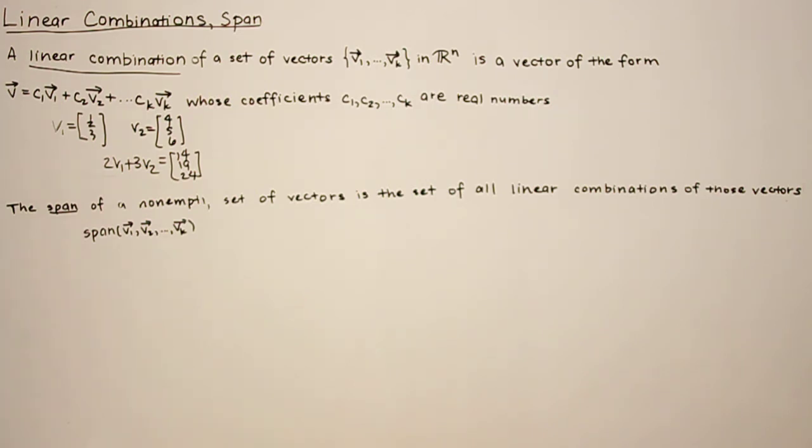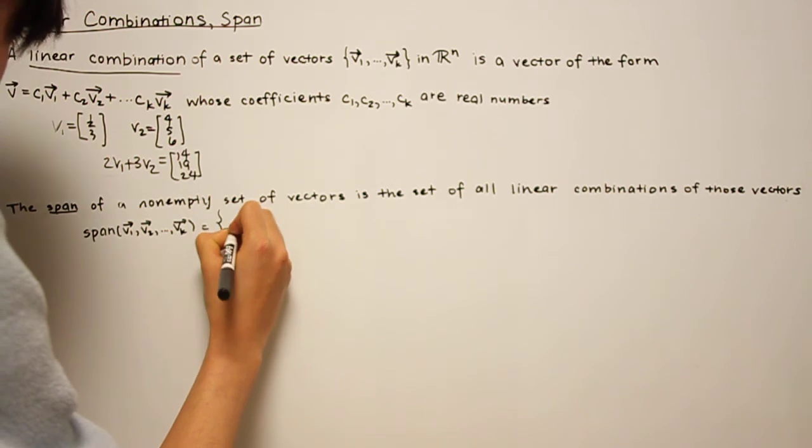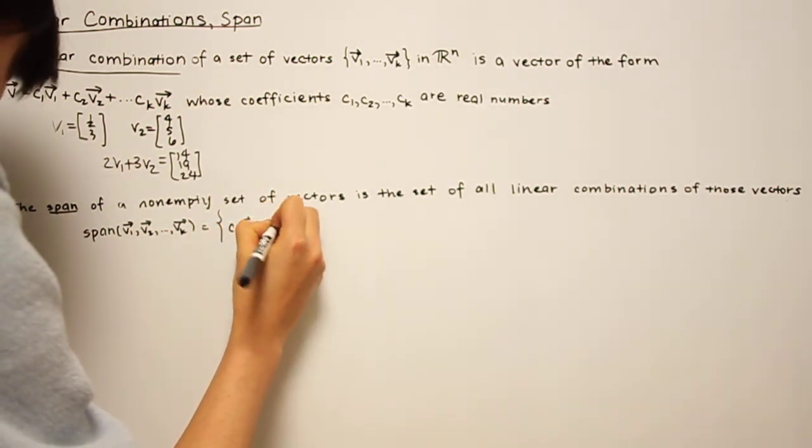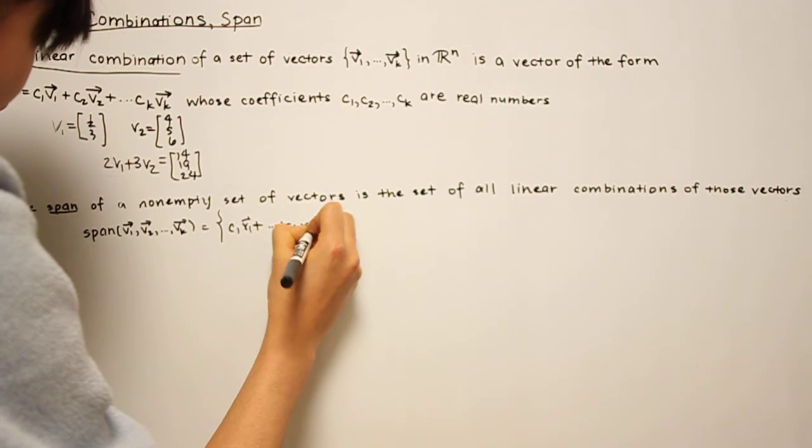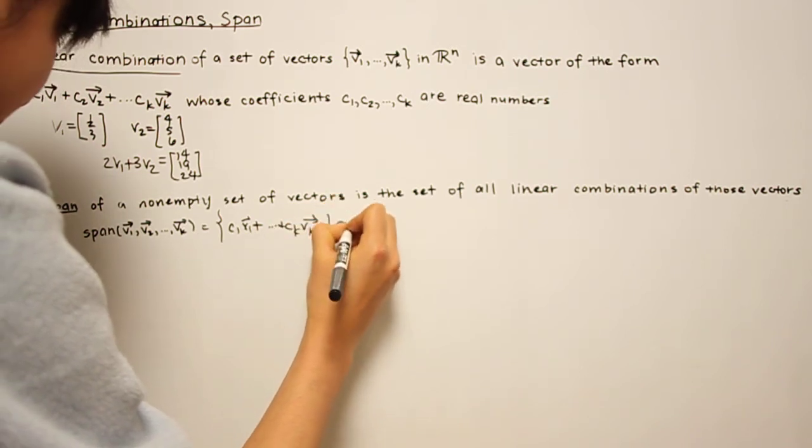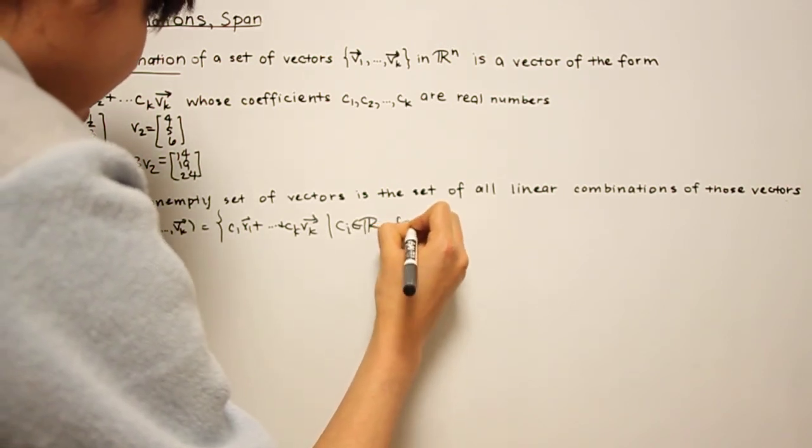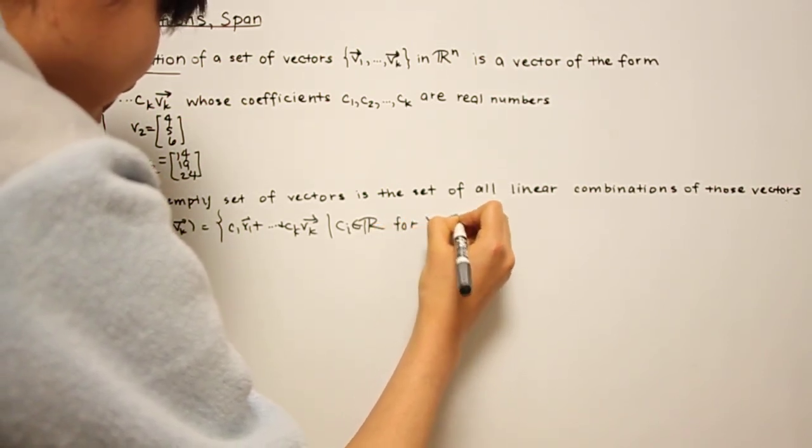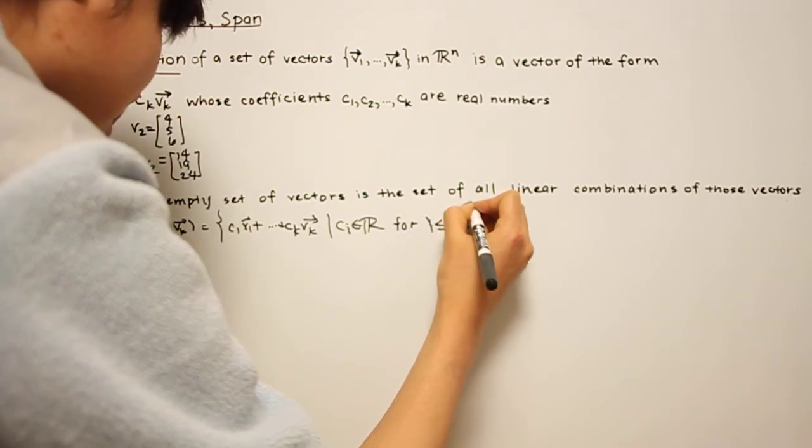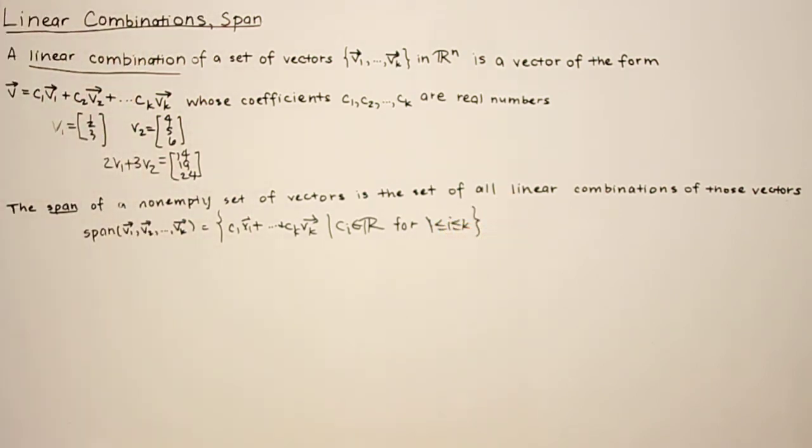And the span of a non-empty set of vectors is the set of all linear combinations of those vectors. So we denote this by span of v1, v2 through vk as c1 v1 through ck vk, so linear combinations where every c is a scalar for all the c1s through ck. Basically, each c is a scalar in the real numbers.